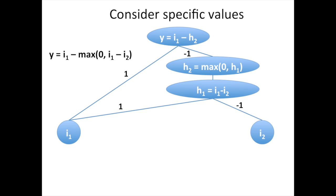Consider the specific values of i1 equals 2 and i2 equals 1. Here, we get h1 equals 2 minus 1, which is 1, and h2 is max of 0 and 1, which is 1, and y is i1 minus h2, which comes down to 2 minus 1, which is 1.